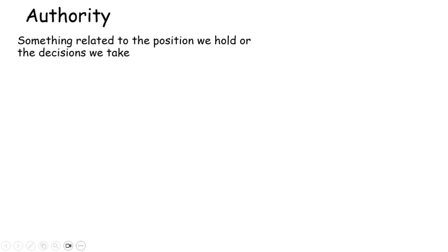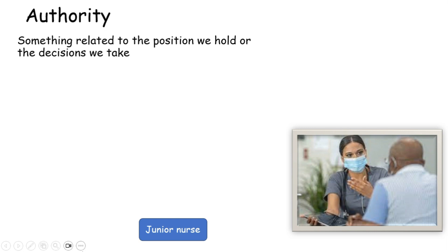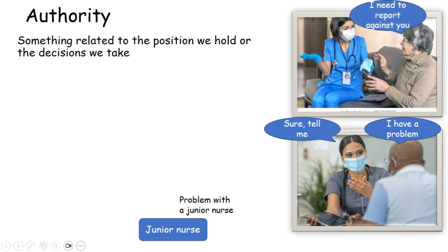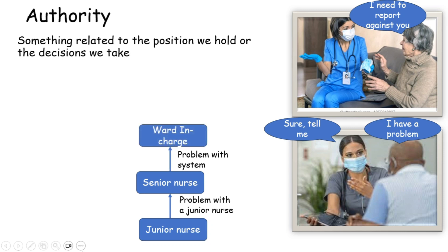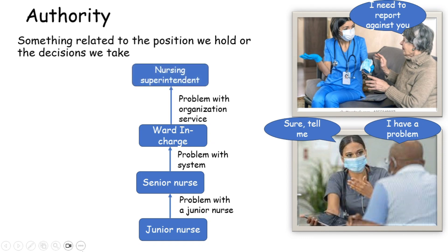For example, if I am a junior nurse, I can do basic procedures for a patient. If the patient has a problem with my procedure, I can identify and solve it. But if the patient says they want to complain about my care, I have to inform my senior because handling that is not my authority. If the patient has a problem with the system in the department, that goes to the ward in-charge. If the patient has a problem with the nursing service, it goes to the nursing superintendent — this authority comes from the power given to us by the organization.